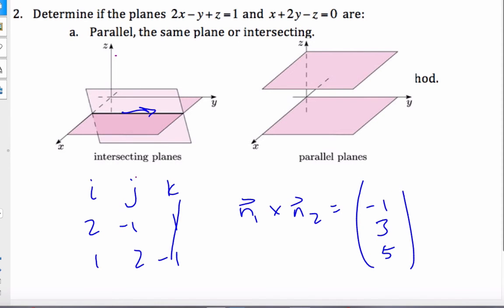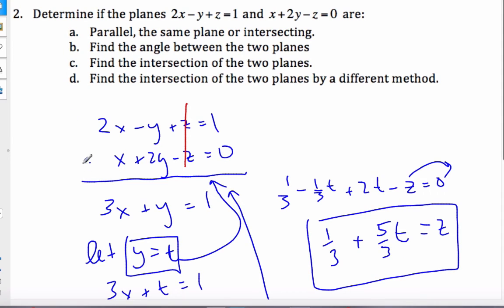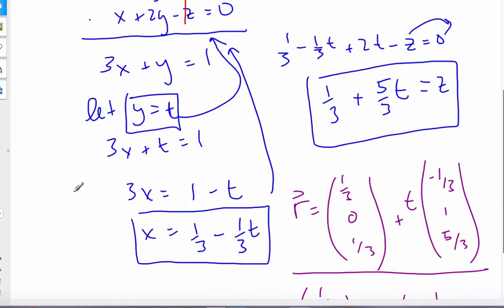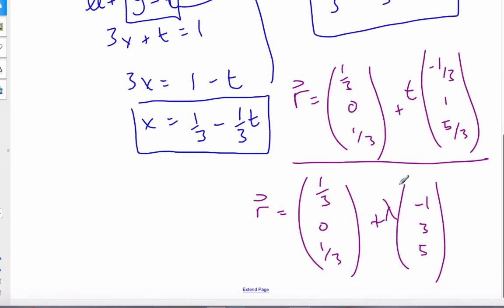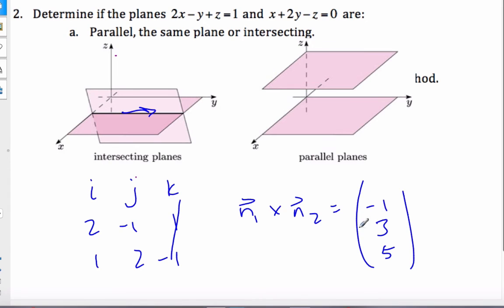It should be the same direction vector from the previous example if I've done my algebra correct. And as you can see, -1, 3, 5 is the same direction as the cross product of the normals. So I have my direction vector.